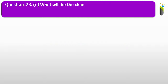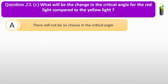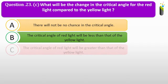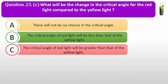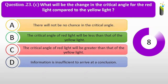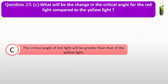Question number twenty-three C. What will be the change in the critical angle for red light compared to yellow light? A, there will be no change in the critical angle. B, the critical angle of red light will be less than that of yellow light. C, the critical angle of red light will be greater than that of yellow light. The correct answer is C: the critical angle of the red light will be greater than that of the yellow light.